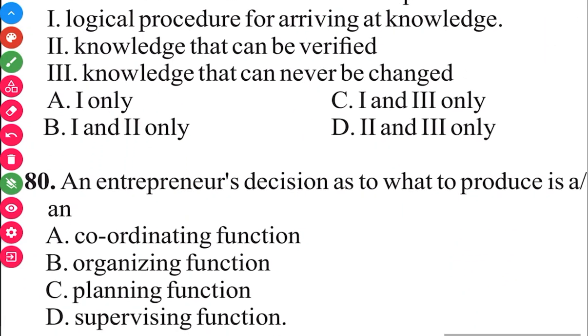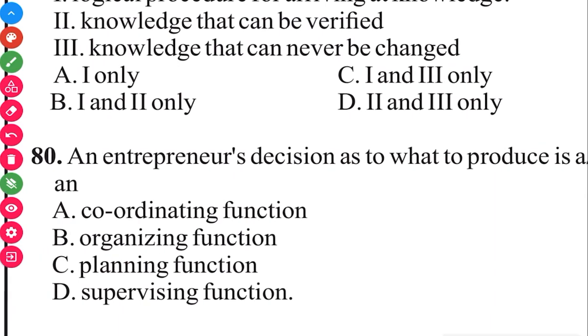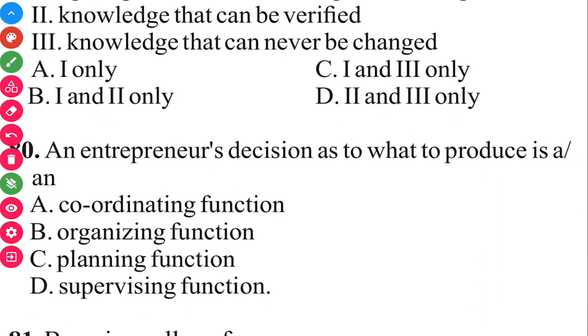Question 80. An entrepreneur's decision to what to produce is a planning function. The answer in 3, 2, 1, C, planning function.